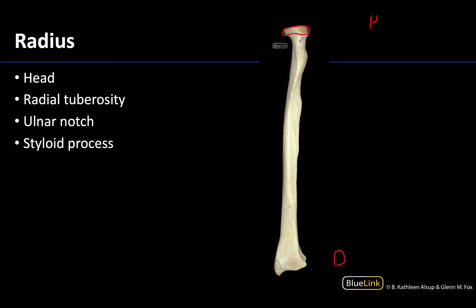Just distal to the head is the neck — any time you have a head you typically have a neck just distal to it. Then you have a fairly robust radial tuberosity distal to the neck, which is important as the distal attachment point for the biceps brachii. Those two heads of the biceps brachii share a common tendon that attaches here at the radial tuberosity.